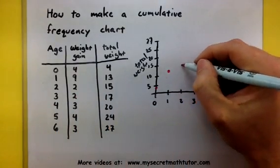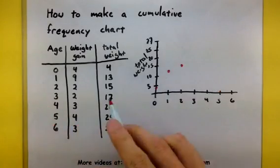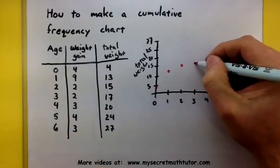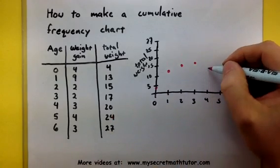Two, we made it to fifteen. Three, we are at seventeen. Four, we made it to twenty.